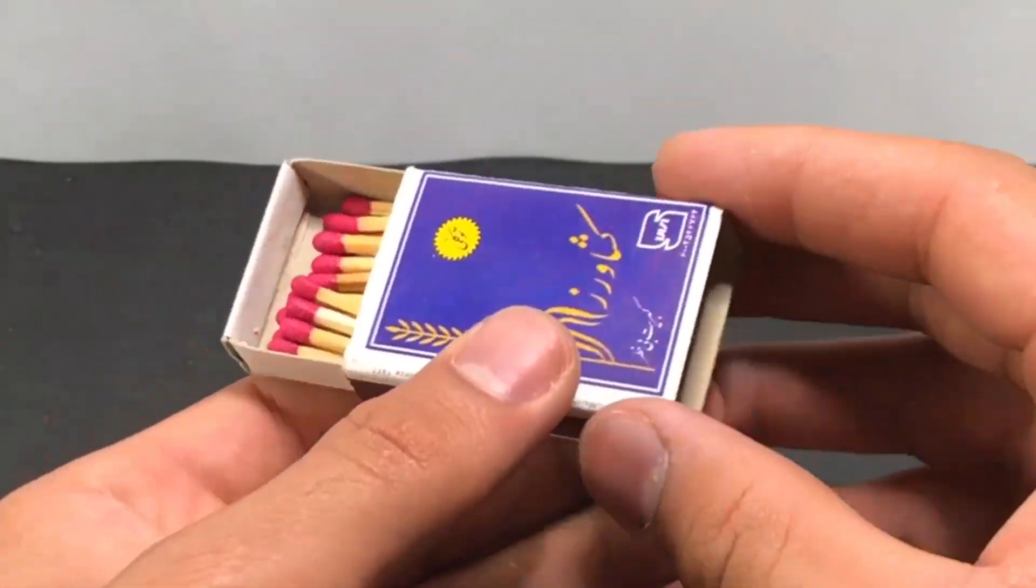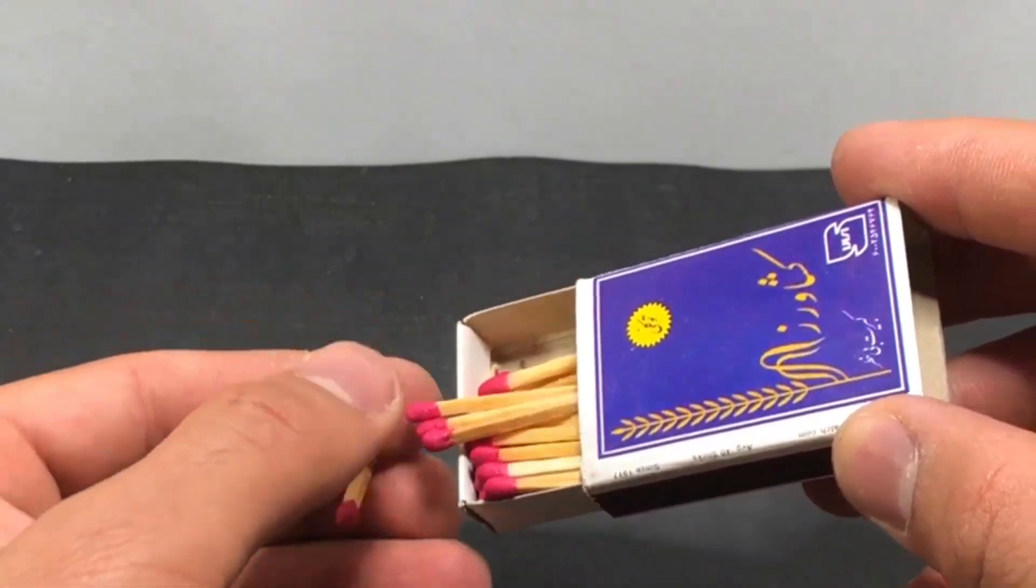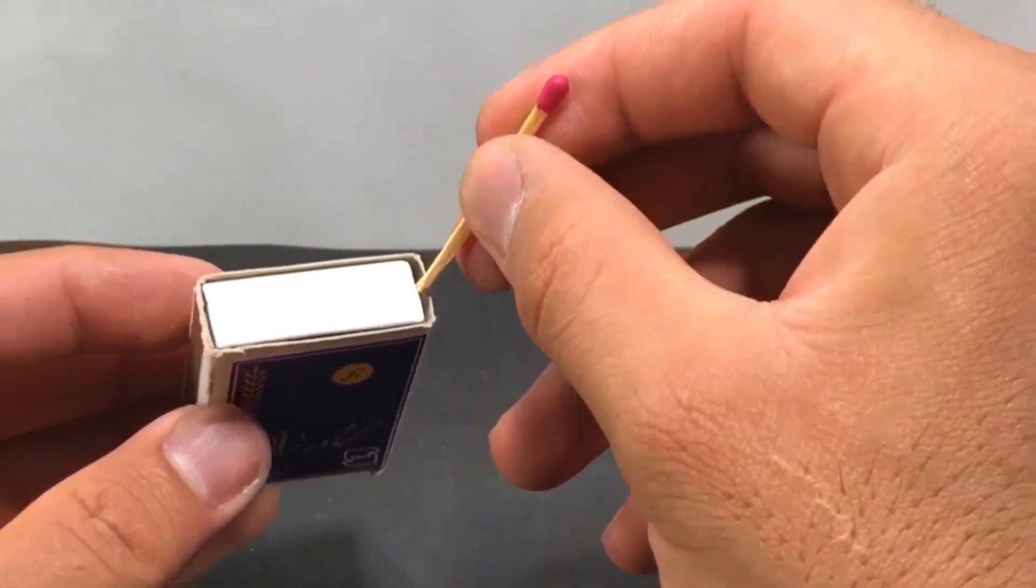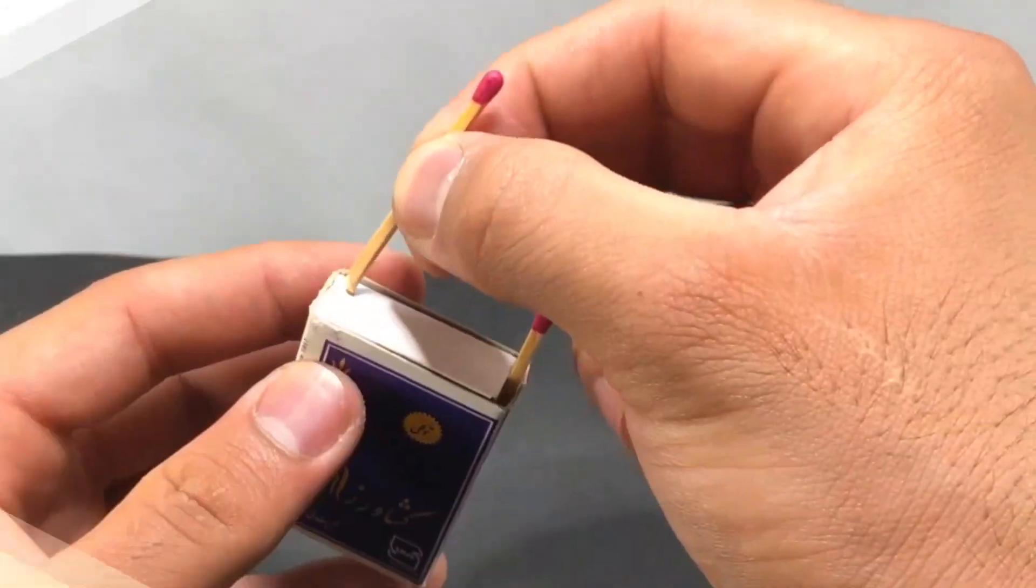In this part, we are going to make fire arrows using matches. According to the video, the matches are placed inside their box.